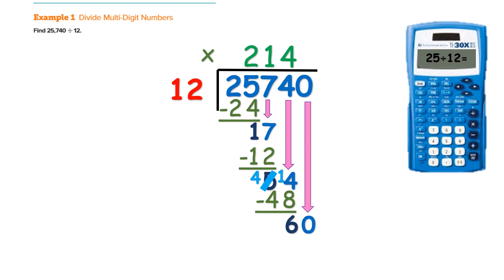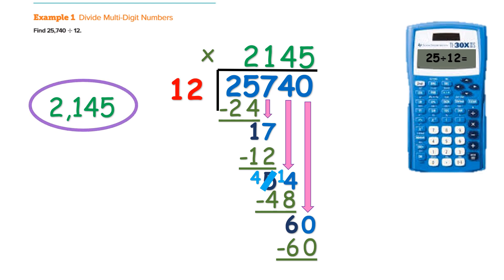I still have another digit to bring down, so I bring down my 0. Notice how my answers are lining up with each of the numbers from the dividend. How many times will 12 go into 60? Type it into your calculator: 60 divided by 12 equals 5. Then 5 times 12 is 60, so now you have a 0 remainder. The answer is 2,145, and then we simply circle it on our assignment.